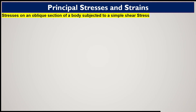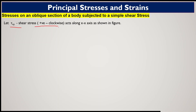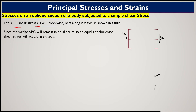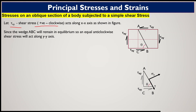We will evaluate analytically what stresses act on a plane having an angle of inclination theta — stresses on an oblique section subjected to simple shear stress. The horizontal axis is taken as the x-axis. Let tau_xy be the shear stress acting in the clockwise direction, taken as positive, acting along the x-axis as seen in the figure. This is a rectangular body or any section of the body.